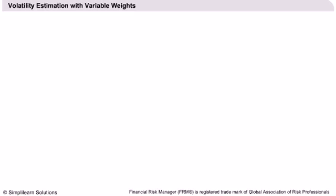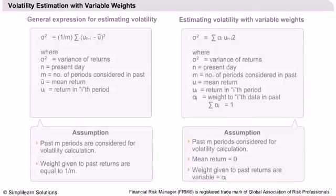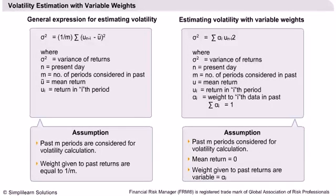Let us begin our discussion by introducing the weighing schemes used in volatility calculation. Earlier, we have learned the expression for calculating variance from past M data. The expression given in the slide averages the squared deviations from the mean return. We take the simple average because we weigh all the past M data equally — that is, they make equal contribution to the volatility in the present day.